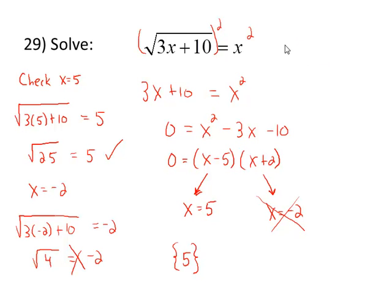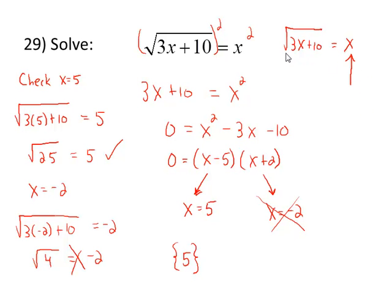By the way, going back to the original equation: the square root of 3x plus 10 equals x. When you're working with even roots such as a square root, what you really want to check is the expression that the square root is equal to. A square root with this symbol has to be non-negative. So if I plugged in negative 2 on the right side, I can see that a square root can't equal a negative number — I could have thrown that out right away.